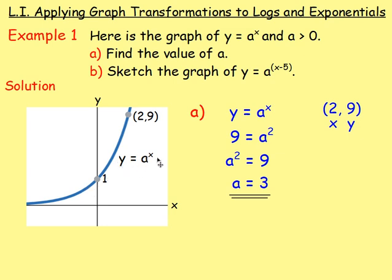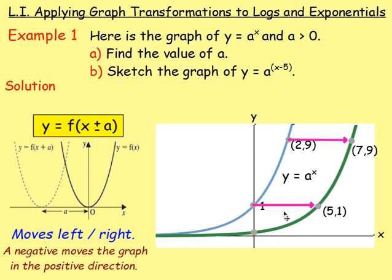Sometimes for these questions, you'll be asked to work out certain values before you apply a transformation. For example, here we have y equals a to the power of x. We are given this point 2, 9. So if you sub in 2 and 9, replace x with 2 and y with 9, you could work out the value of a, as we did in that example. After that, we had to sketch the graph of a to the power of x minus 5. Think back to your transformations about which one that was. But because it's inside the brackets, it's going to shift the graph to the left or the right. The negative will move the graph in the positive direction. So every single point would move to the right 5 units.